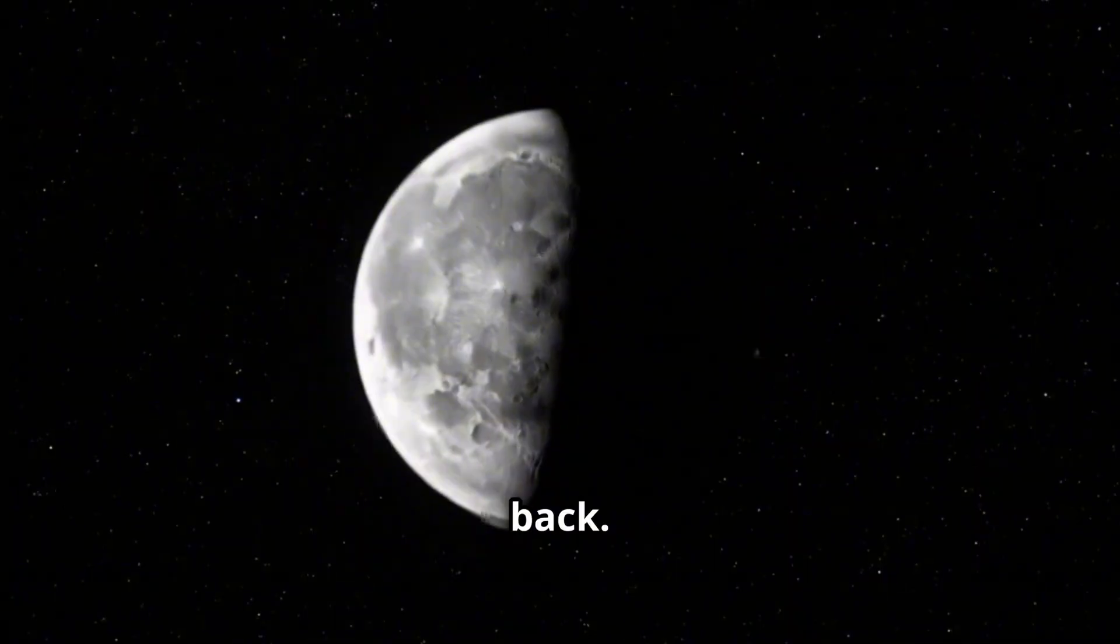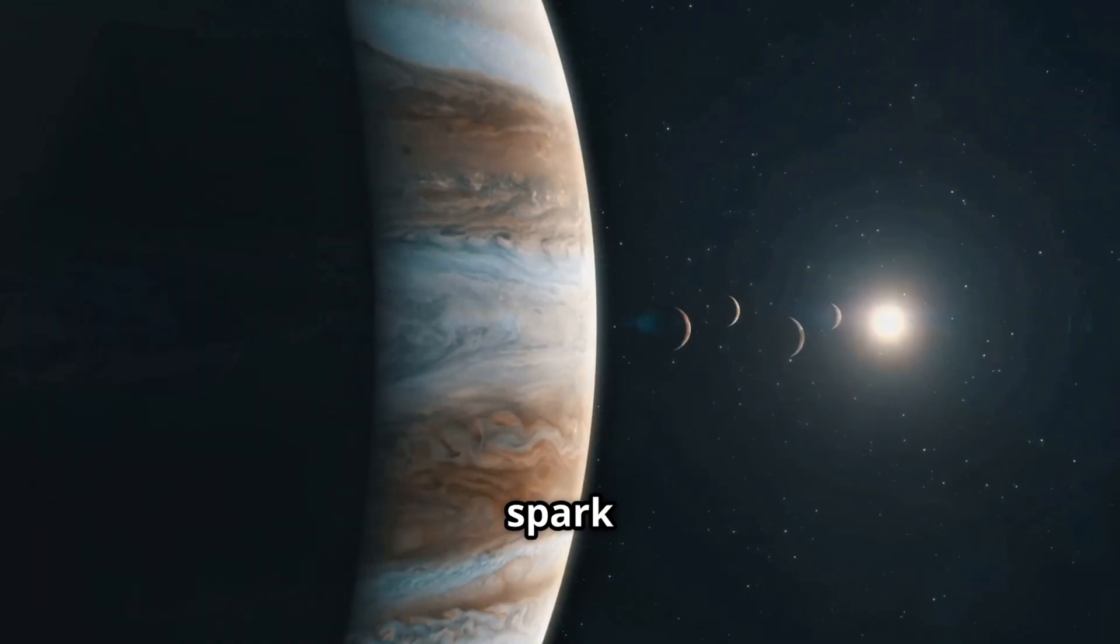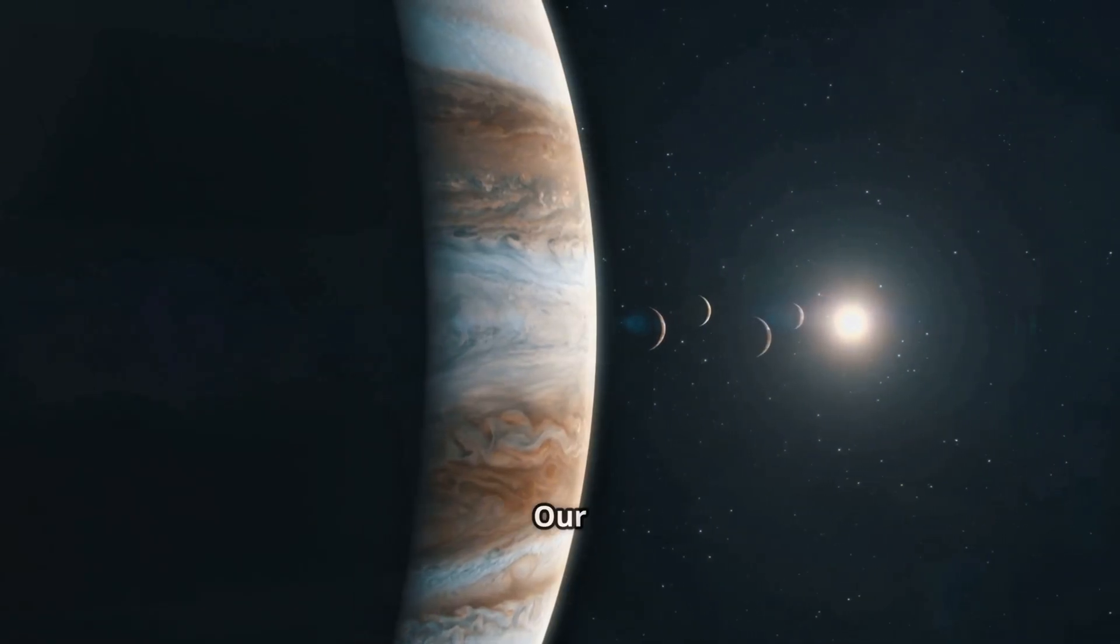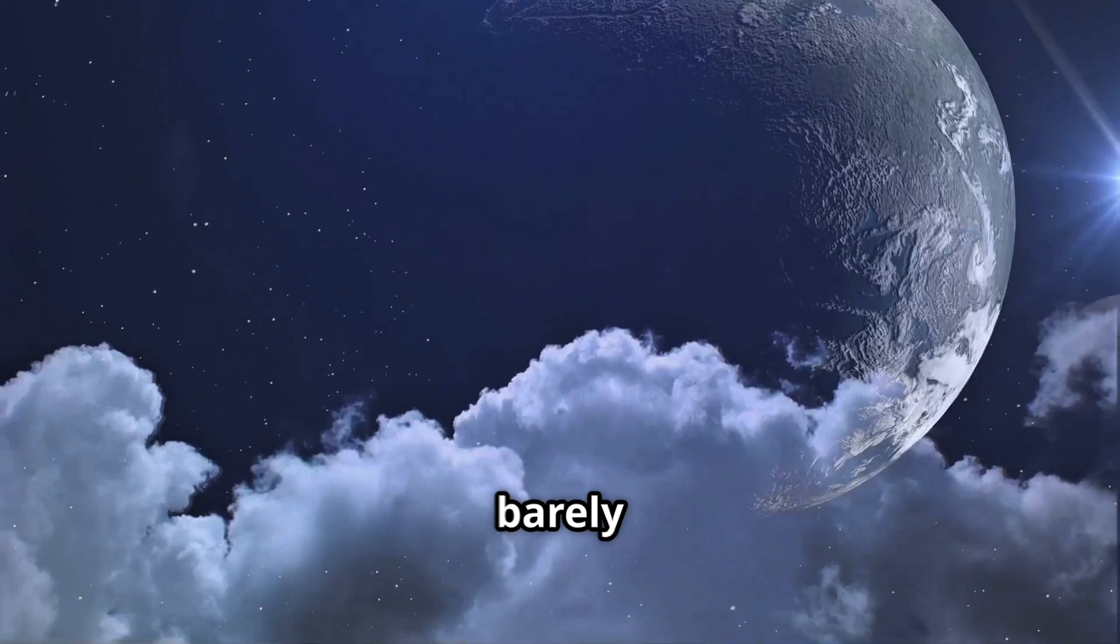Keep pulling back. The moon vanishes, planets appear, the sun glows at the center, a single spark in a black ocean. Our solar system is huge, but in cosmic terms, it's barely a dot.